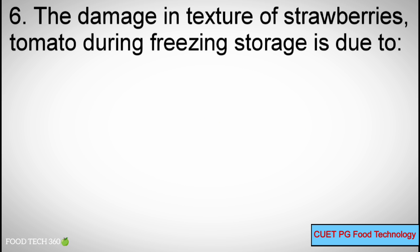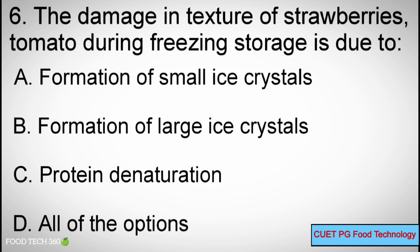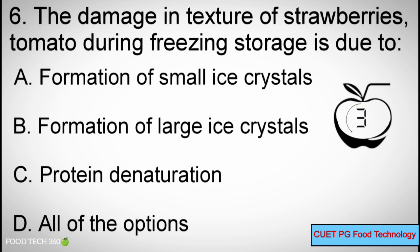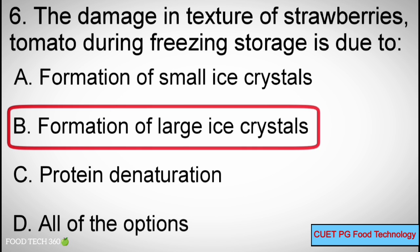Q6: The damage in texture of strawberries and tomatoes during freezing storage is due to — A. Formation of small ice crystals, B. Formation of large ice crystals, C. Protein denaturation, D. All of the options. Correct answer: B. Formation of large ice crystals.